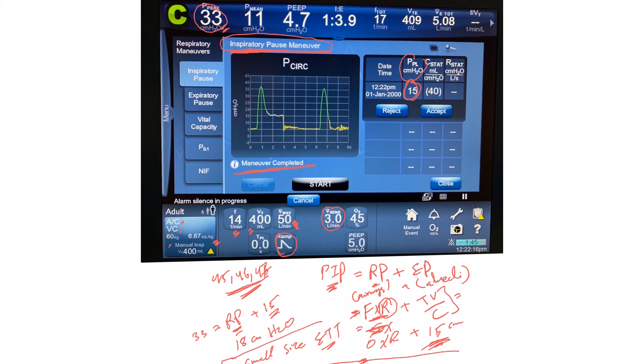Then we checked the plateau pressure, so we knew it was something in the airways. She didn't have COPD, asthma, airway disease, or mucus plugs, so we looked at the ET tube and found it was a small size. ET tubes have different sizes—6.5, 7, 7.5, 8—depending on the patient's size.